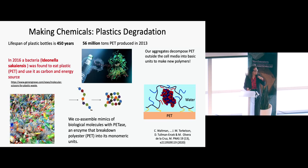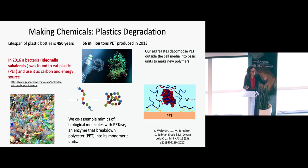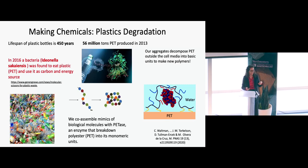PET is the most common polyester in your clothes and in bottles. In 2016, people discovered a bacterium that actually eats plastics and converts them into energy and food. We want to know how it does this because we want to recover outside the cell the monomers it converts in order to make new polymers. So you have to take out the enzyme it uses, which is PETase, and make it work outside the cell.